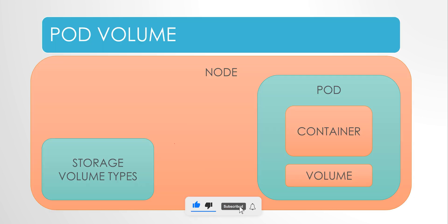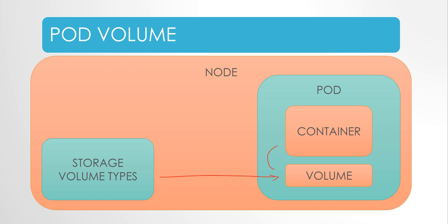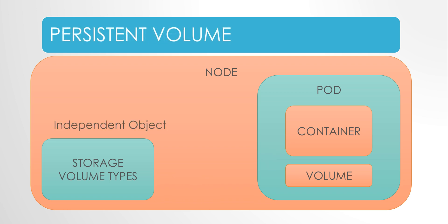This is the high level diagram of how volumes are used in Kubernetes. When creating a volume, we create an external storage type, define it, and then link it to the volume in pod configuration, and in pod configuration we link this volume to the container. This is how volumes are generally defined. But coming to persistent volumes, we follow the same process but instead of directly linking this external storage to the pod volume, we break it and create this complete step as an independent object.